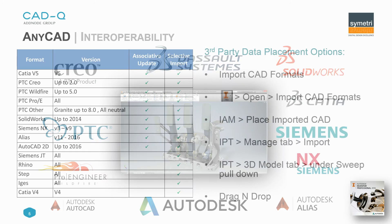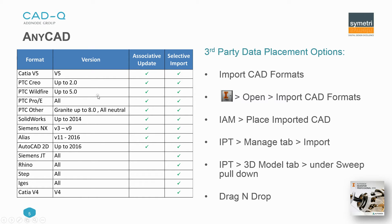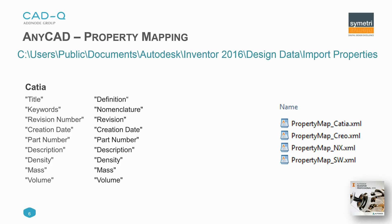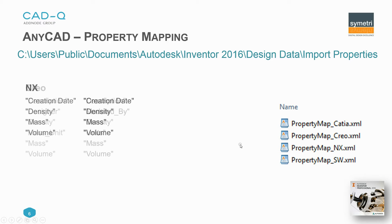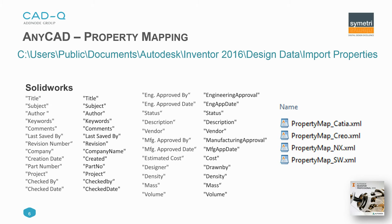It's not just the 3D models that are important. We can pull in data associatively from lots of different systems, and we have many different ways of pulling that data in. The 3D data is not the be-all and end-all — one of the big things we have to think about is our bill of materials as well. AnyCAD, using some new XMLs stored as part of our design data, allows us to create mappings between CATIA, CREO, NX, and SOLIDWORKS to Inventor.